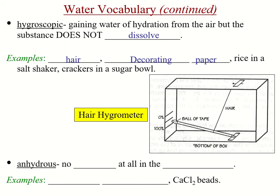In the hygroscopic case, the substance gains water but doesn't dissolve. You can make something called a hair hygrometer. Anyone with natural curly hair notices that when it's more humid the hair tends to curl up, and that's what makes this hair hygrometer work — you can see how the hair will frizz or curl up the more humid it is.